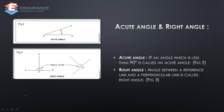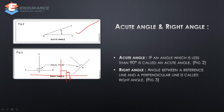The next one is acute angle and right angle. What is the acute angle? The angle is less than 90 degrees. If you look at a triangle, the angle is less than 90 degrees — that is an acute angle. A right angle is equal to 90 degrees — that is the reference line and the perpendicular line at 90 degrees.